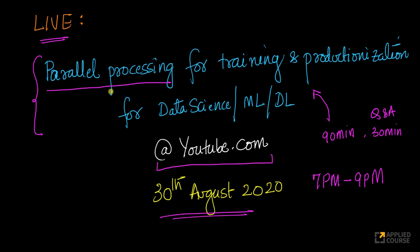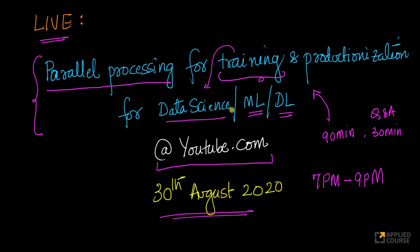We will extend the basics that we learned in the previous session and start applying them to training data science models, doing data science-based analysis, training machine learning models and deep learning models. We will also talk about how parallel processing can be used for productionization of some of these machine learning models, deep learning models, or data science-based analysis.